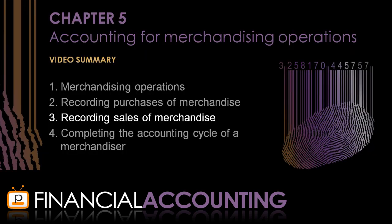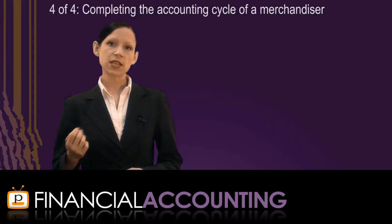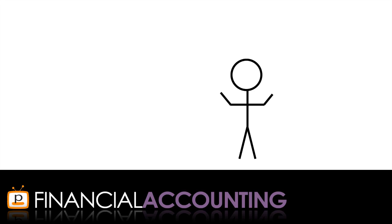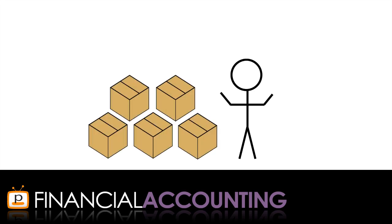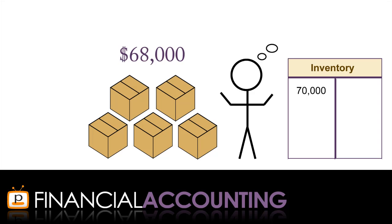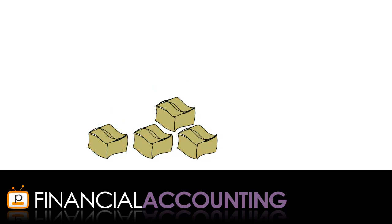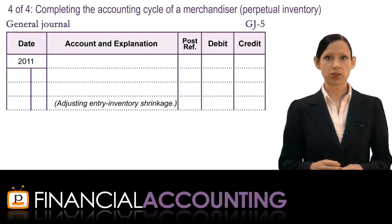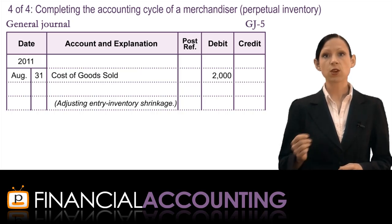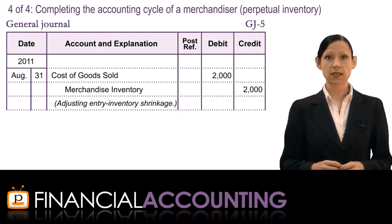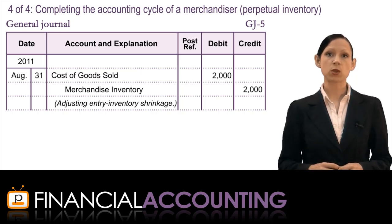Moving on to completing the accounting cycle of a merchandiser: the adjusting entries may include the same entries as a service business, plus one additional entry. At the end of the accounting period, a physical inventory count is taken to calculate the dollar value of inventory on hand, which is then compared to the merchandise inventory account balance. If the actual inventory is less than the recorded amount — due to employee theft, shoplifting, or deterioration — an adjusting entry is made to record inventory shrinkage by debiting cost of goods sold and crediting merchandise inventory. After this entry, the merchandise inventory account reflects the actual value on hand, ready for the financial statements.